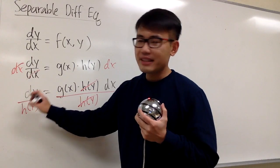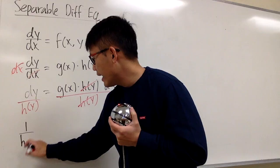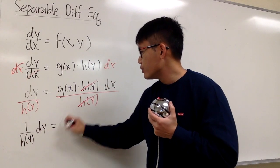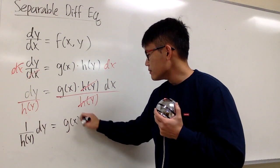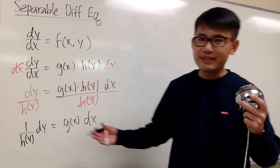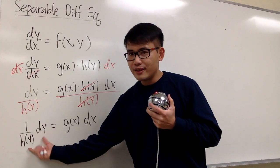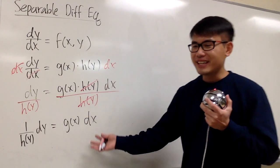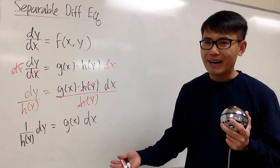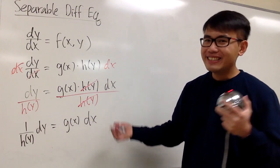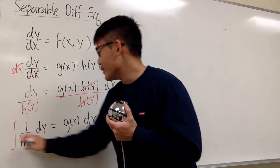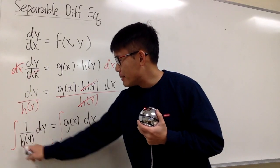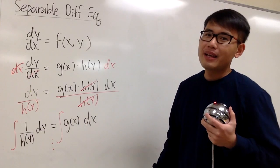On the left-hand side, let me write this down as 1 over h of y with the dy, and this is equal to g of x dx. This is what we mean by all the y's together and all the x's together. Congratulations! To solve this kind of differential equation, all we have to do is integrate both sides — we just have to do the integrals twice. Hopefully, neither side is too difficult to integrate.